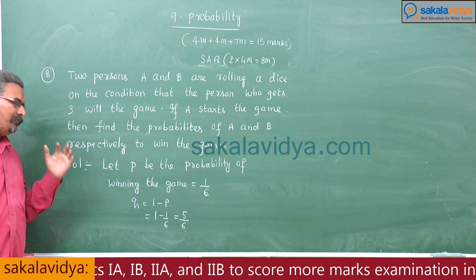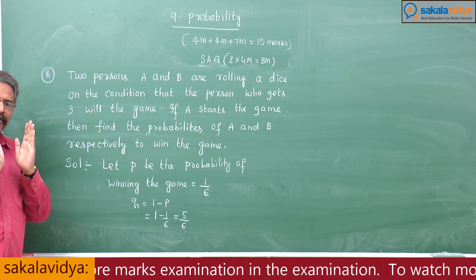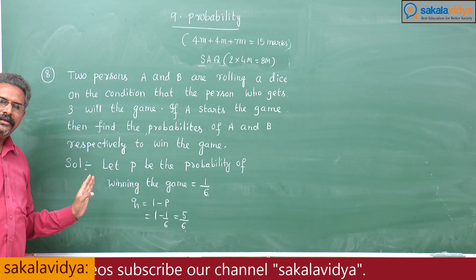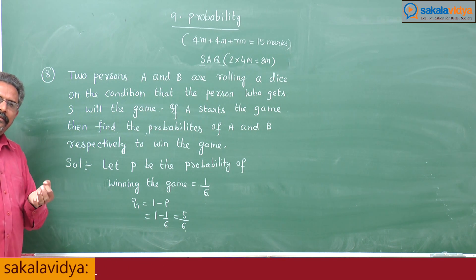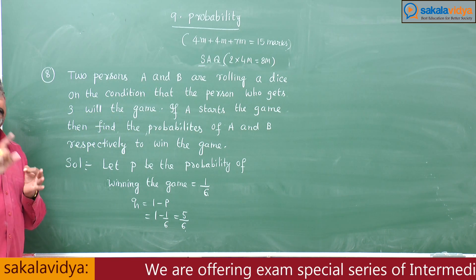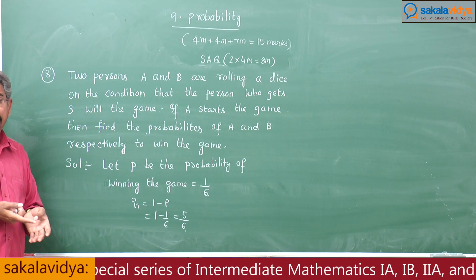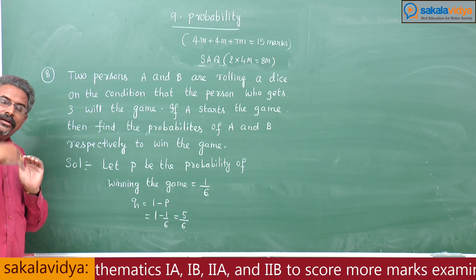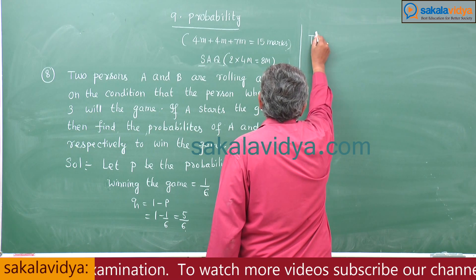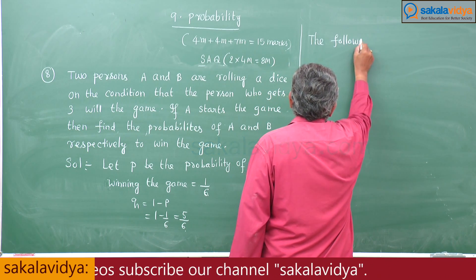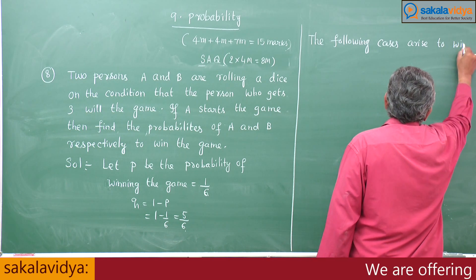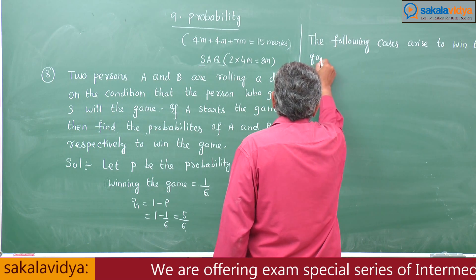How do we declare that A wins the game? A starts the game. In the first attempt, A gets 1 by 6 — then A will be the winner. Suppose in the first attempt A loses and B also loses, then in the second attempt A wins — A will be declared the winner. One more case: both lose twice, then in the third attempt A wins. These cases continue until A wins the match.